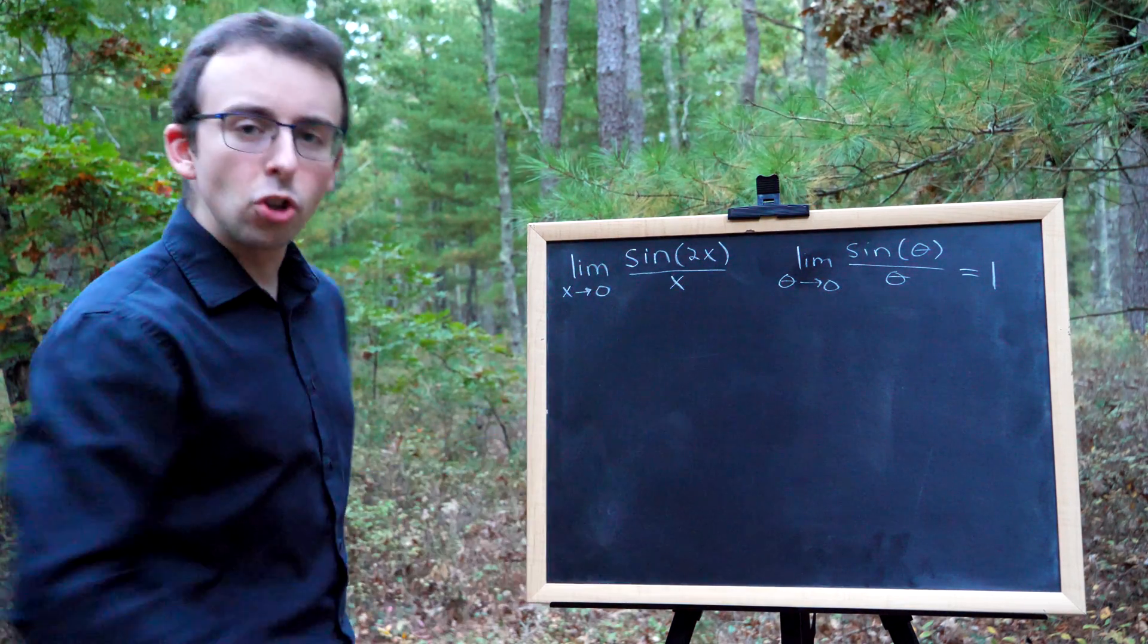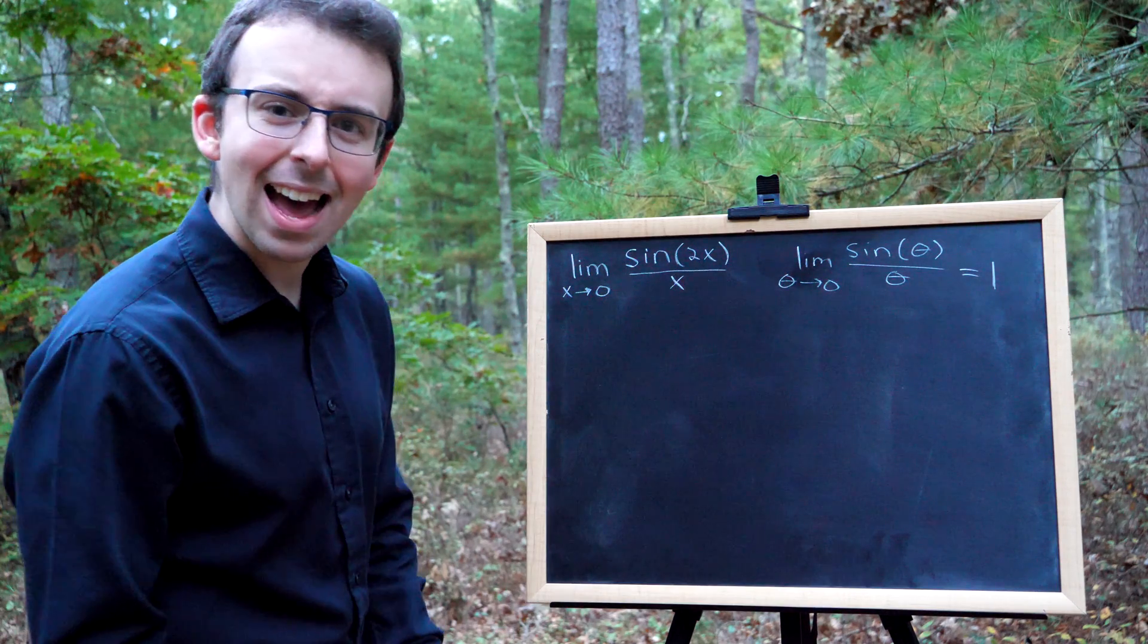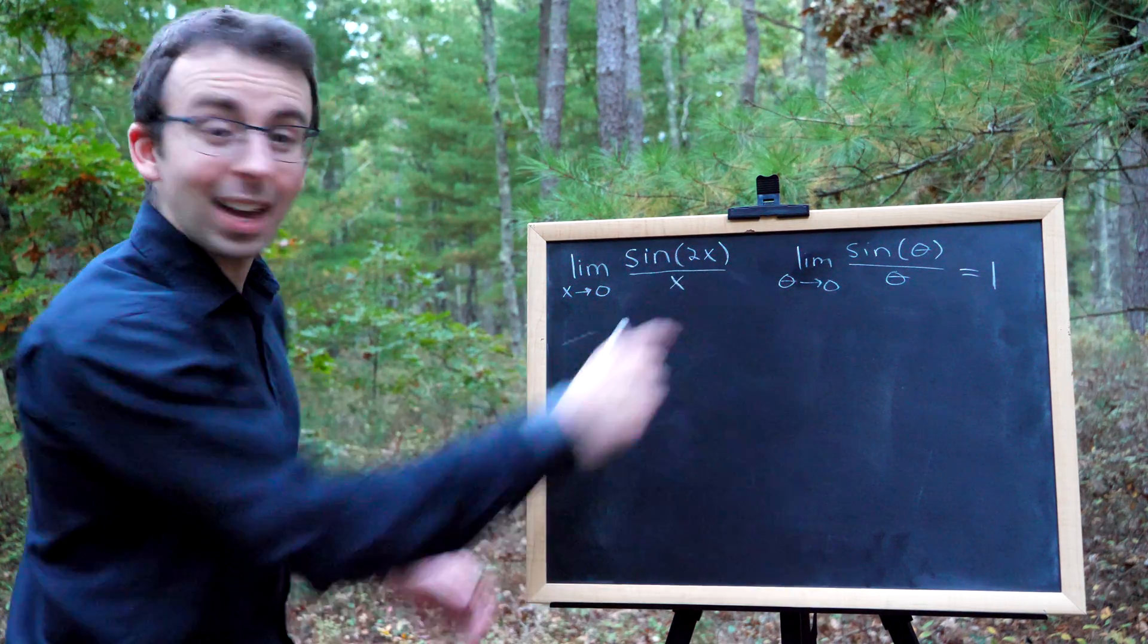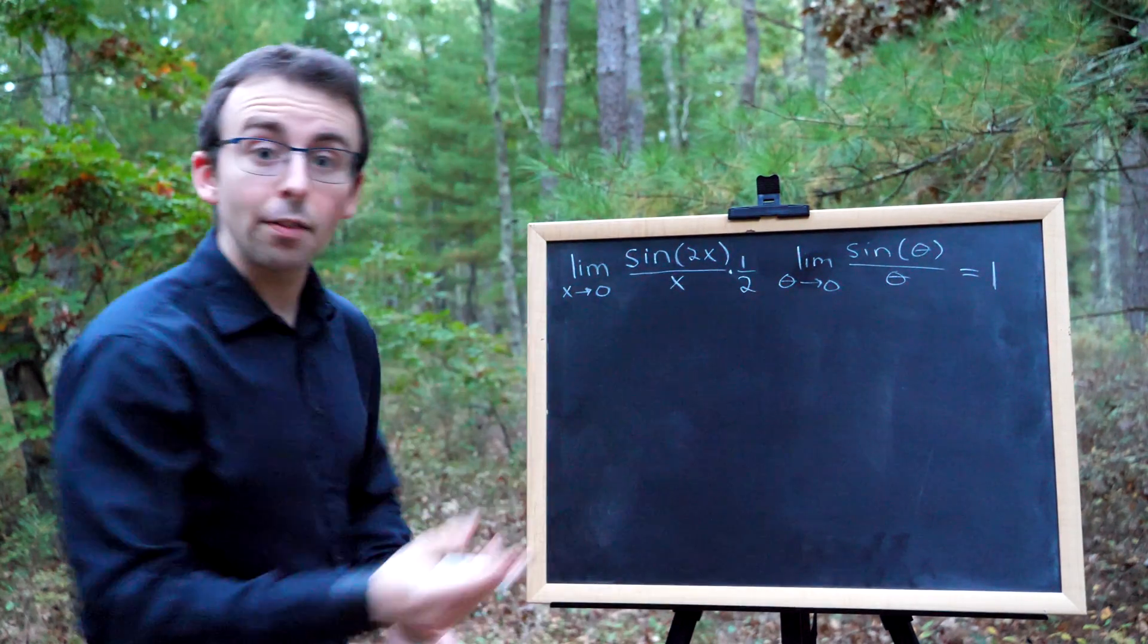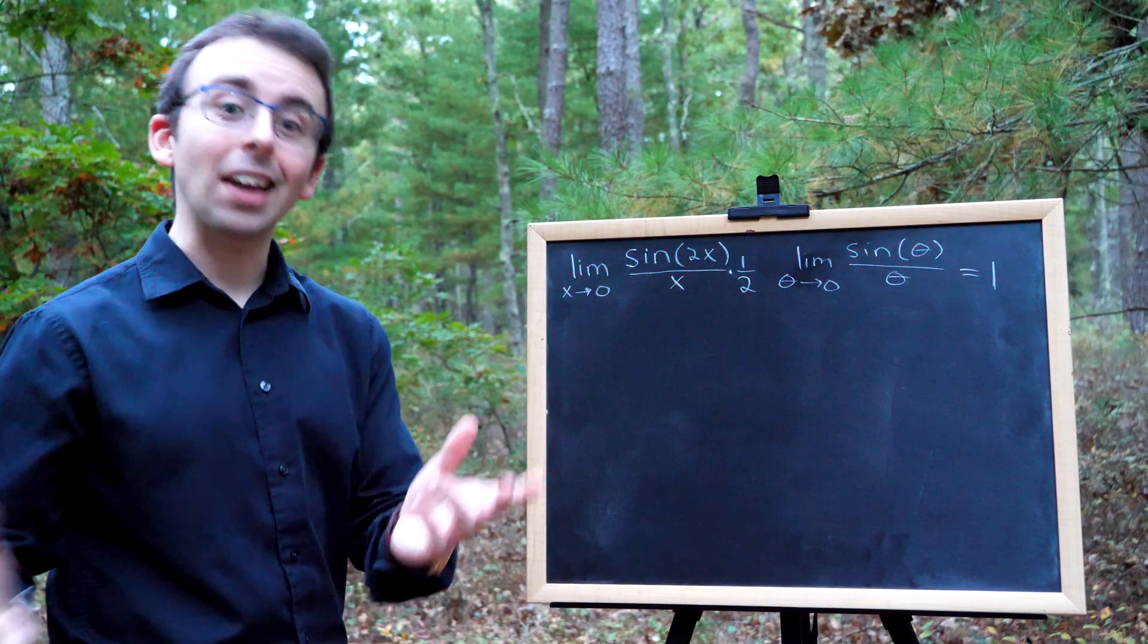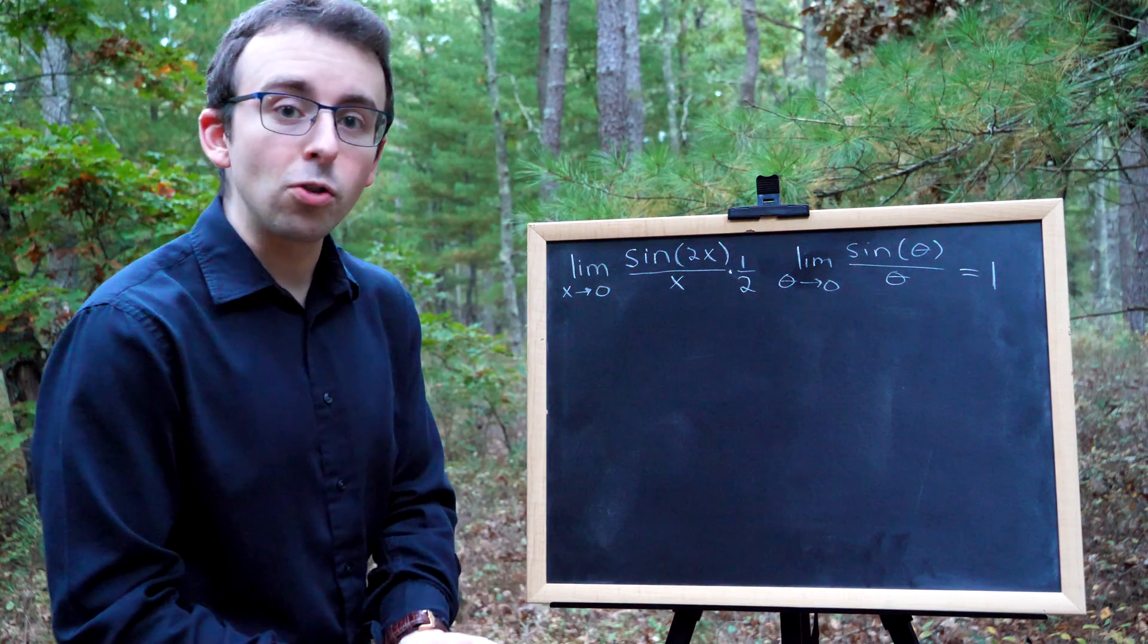In order to get 2x in the denominator, all I'd have to do is multiply by a half, right? So maybe I can squeeze that in right here. What if I just multiply this by a half? Then I'll have 2x in the denominator, just like I want. But of course, if I do that, then I have changed the limit.